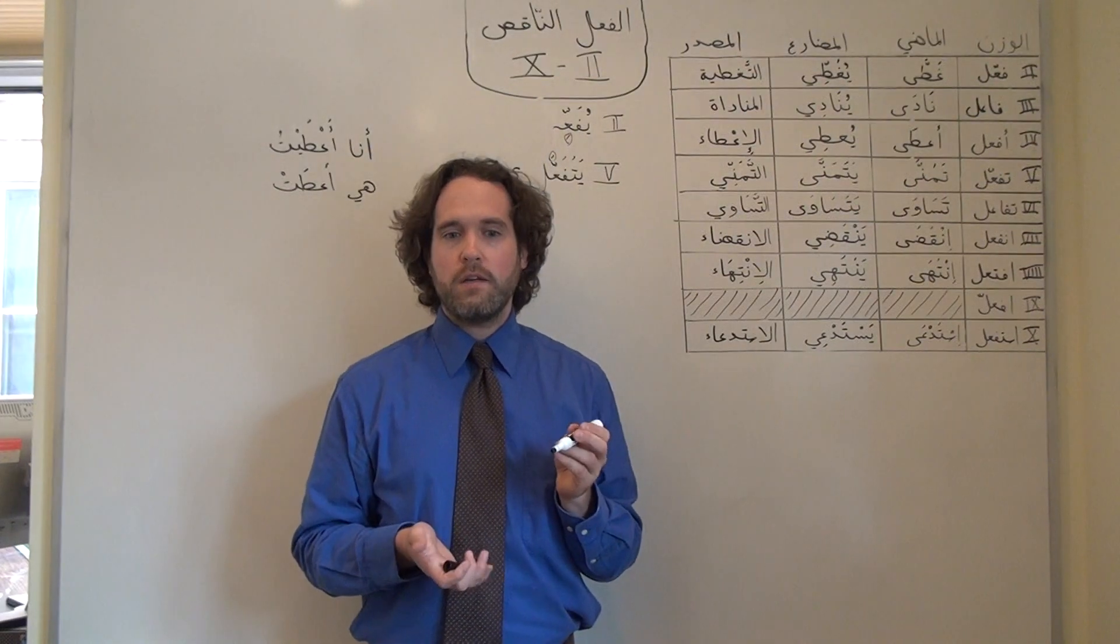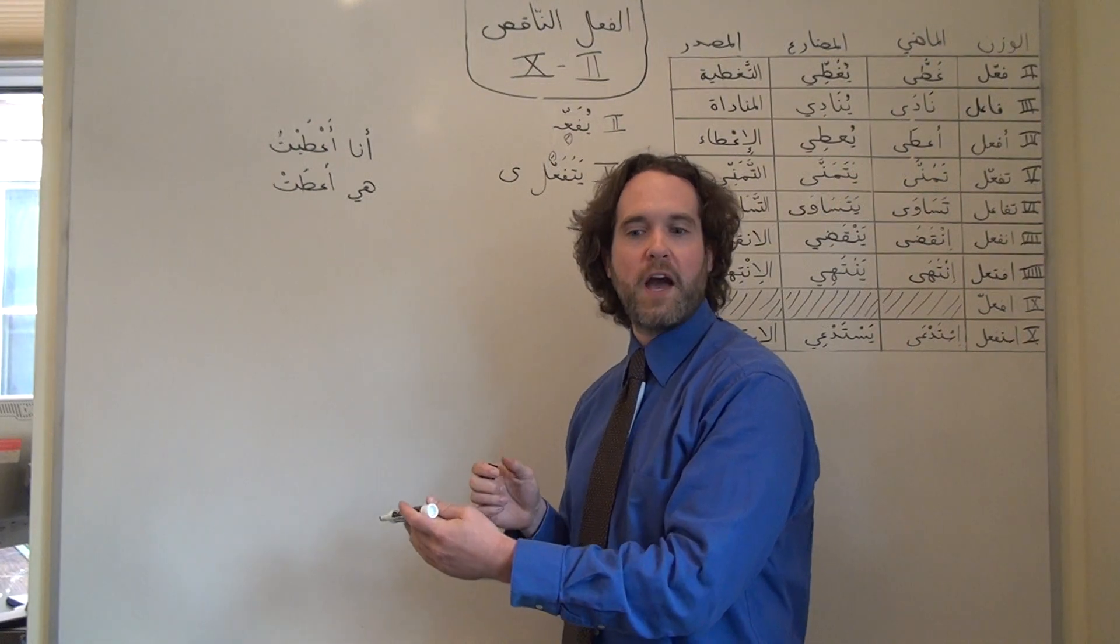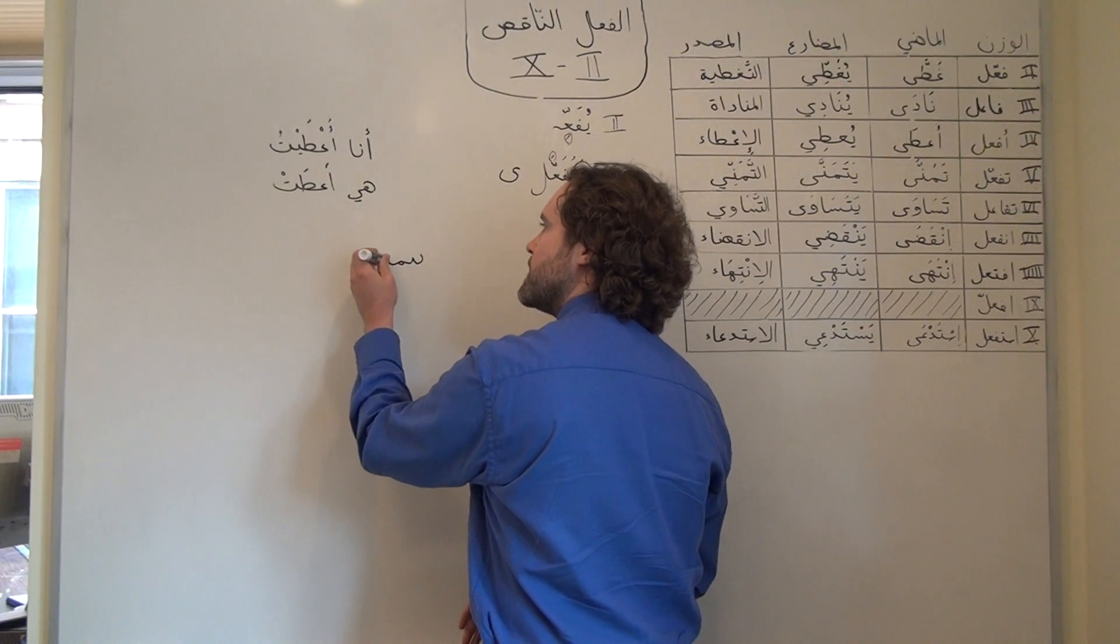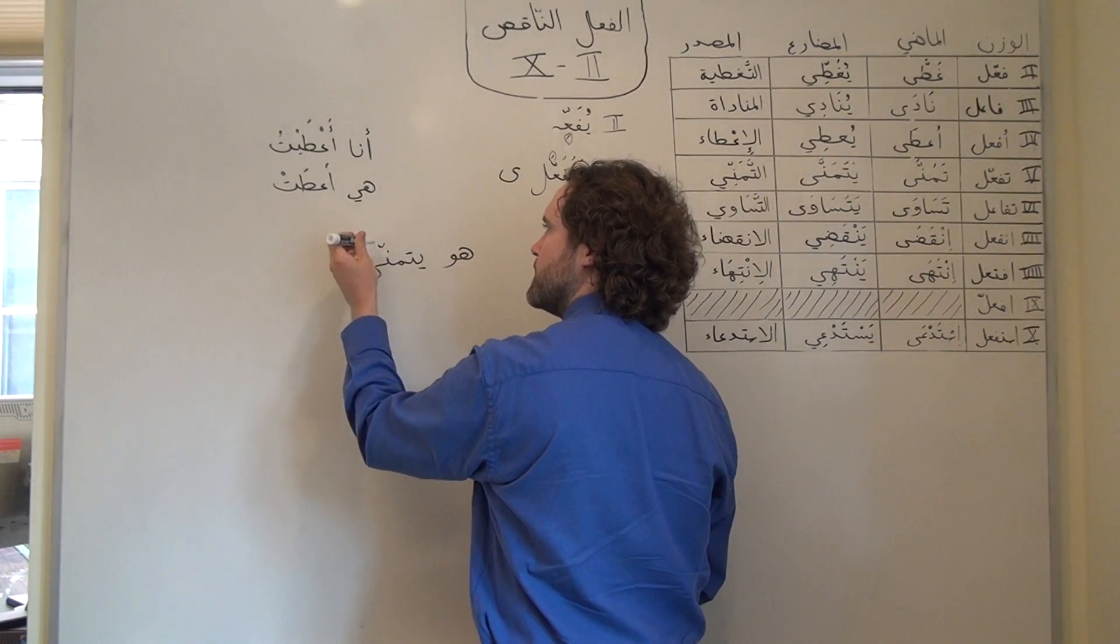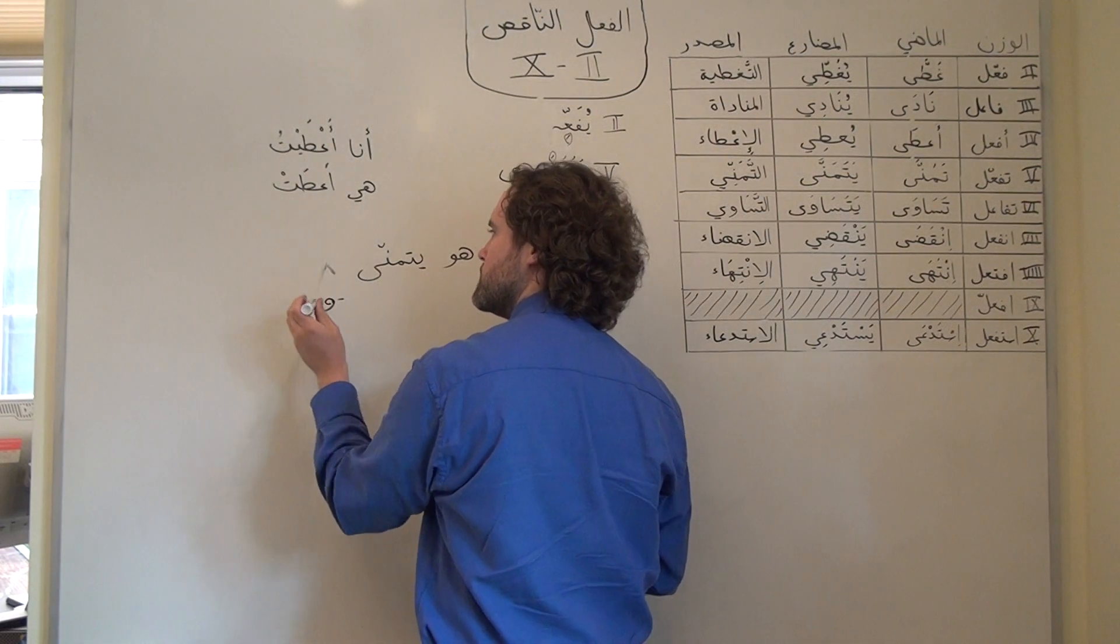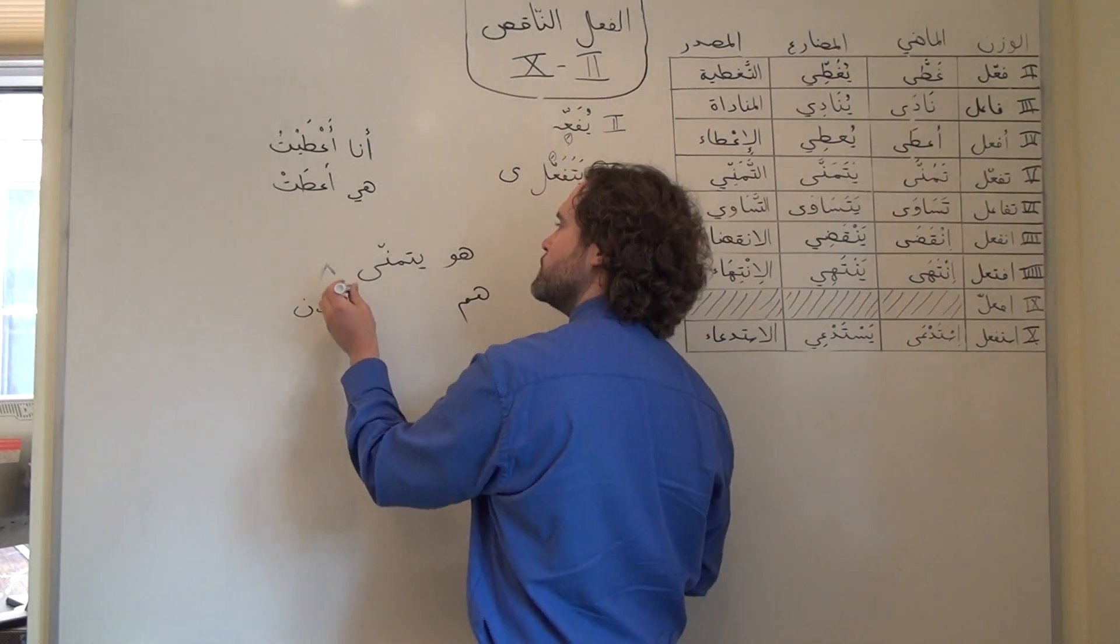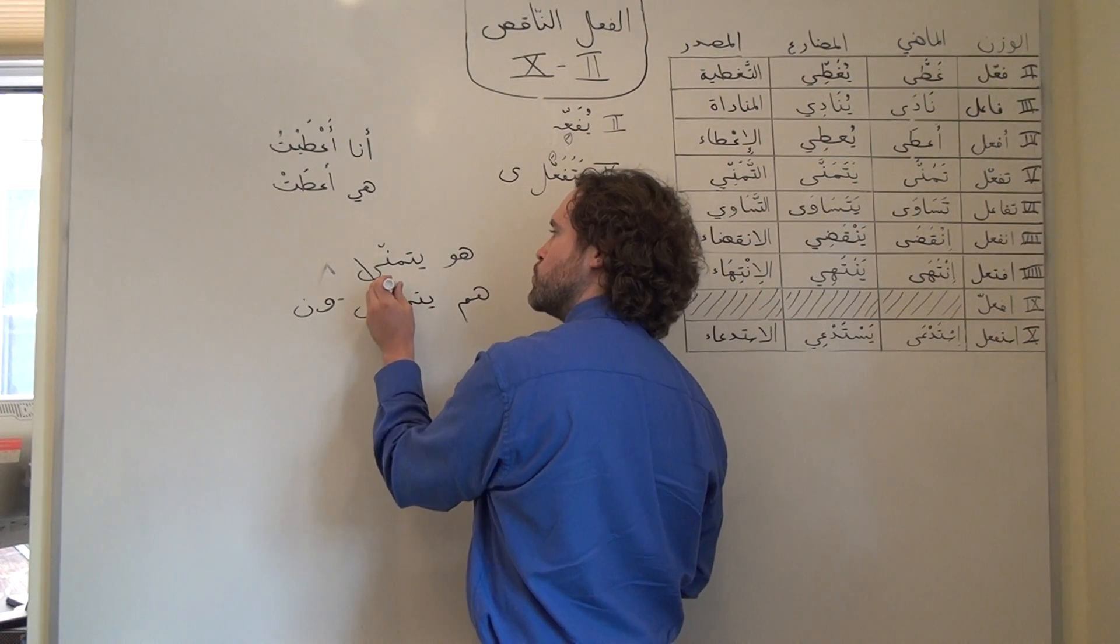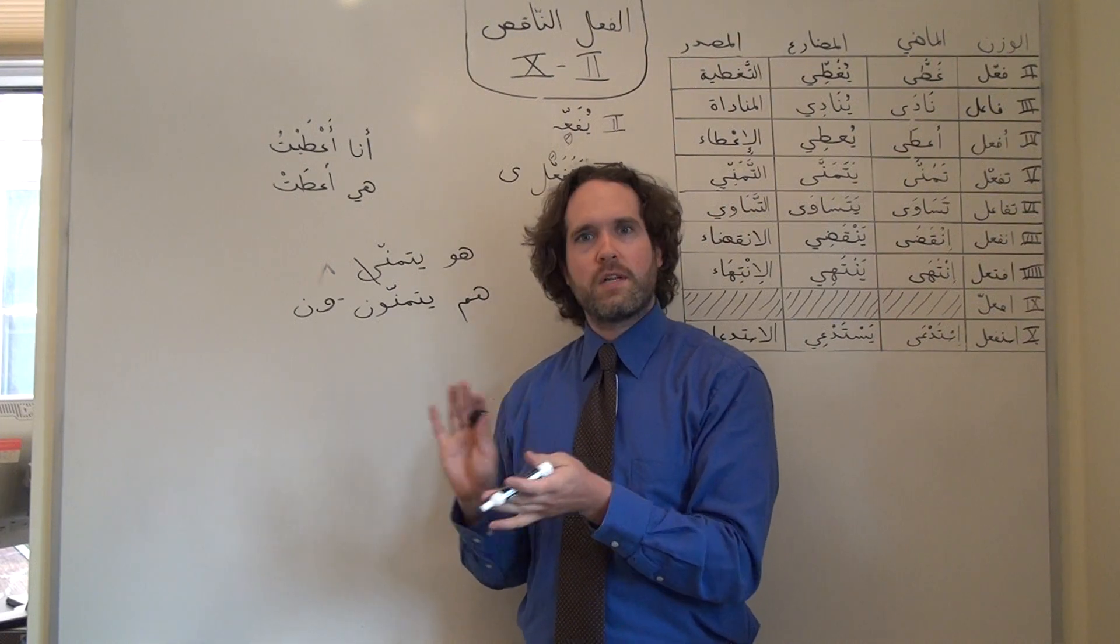Just as with Form 1 فعل ناقص, if we have a present tense conjugation suffix, we usually drop that vowel entirely before we add it on. So if we're saying all of them hope, well هو would be يتمنى, and now we want to add that ون suffix onto the هم version, the third-person plural version, and we're going to just drop that ألف مكسورة and wind up with يتمنون. We're not going to say يتمنيون. That's just not how it's going to work.